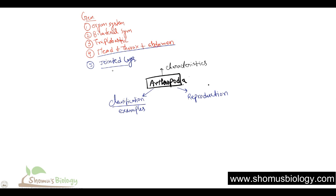Regarding the circulatory system, they have an open circulatory system. This is unique because in Annelida — for example, the earthworm — there is a closed circulatory system, but arthropods have an open circulatory system.